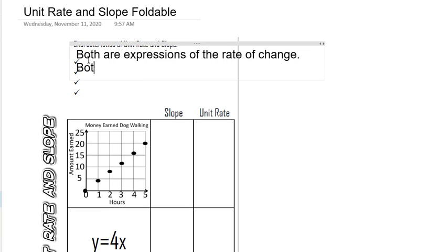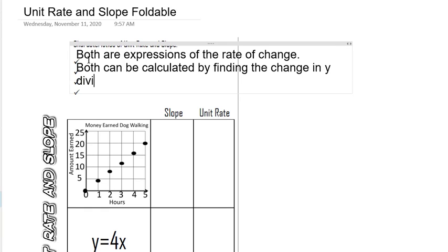Both can be calculated by finding the change in Y divided by the change in X. Unit rate specifically is per one unit.